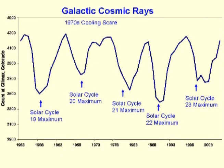This theory also explains why Antarctica has cooled since the early 1980s. Snow and ice have an albedo of 80 and thus are more reflective than clouds. Less cloud over Antarctica makes it colder. The 1970s cooling scare coincided with a high count at solar cycle maximum of solar cycle 20 and an extended period of high annual counts at the following minimum. The galactic cosmic ray and low-level cloud connection is powerful enough to do anything required of it.